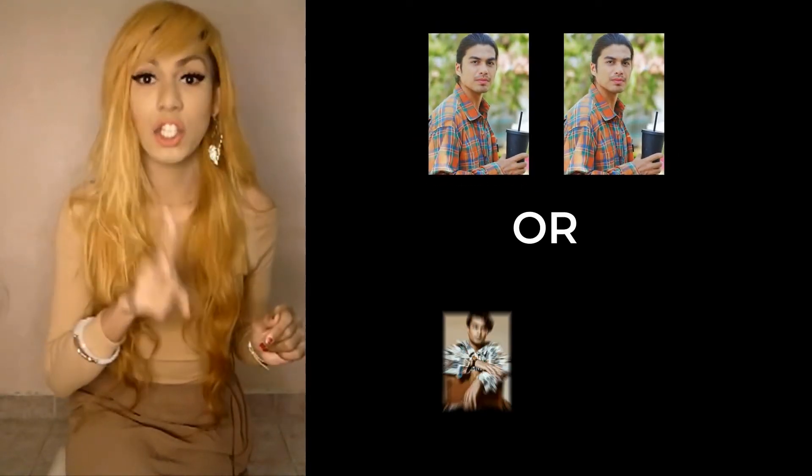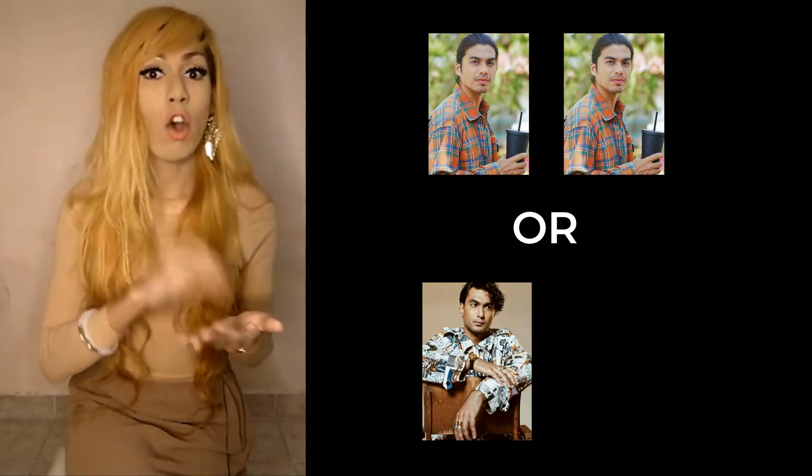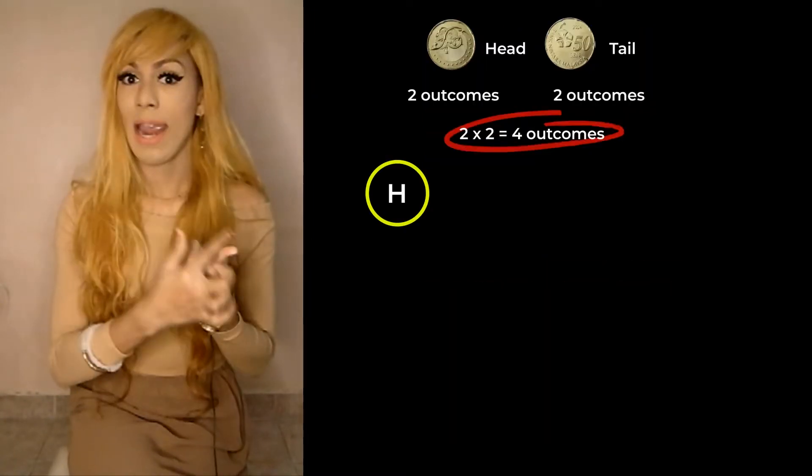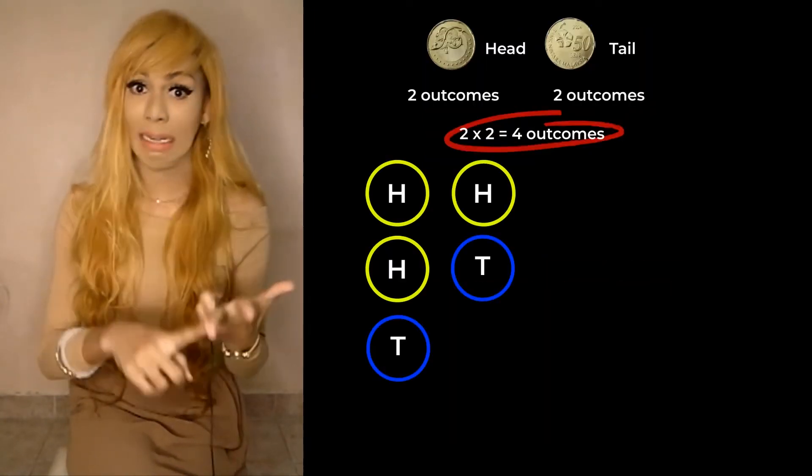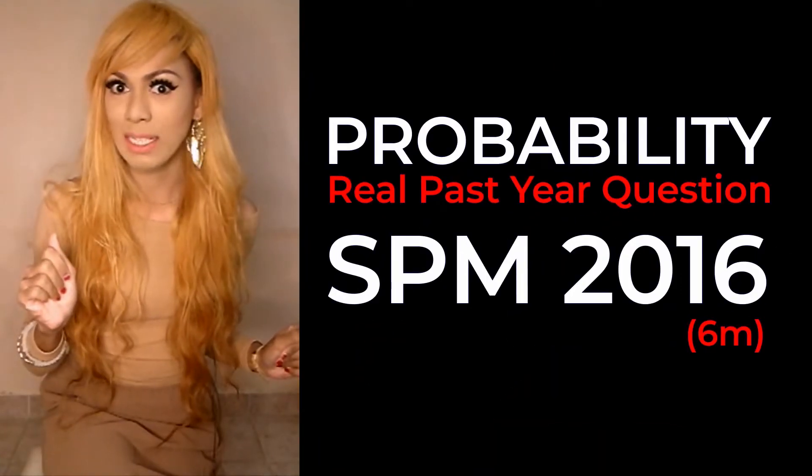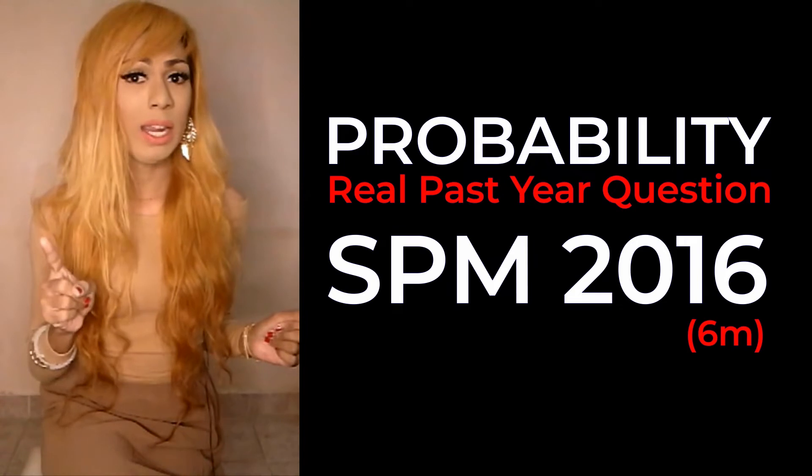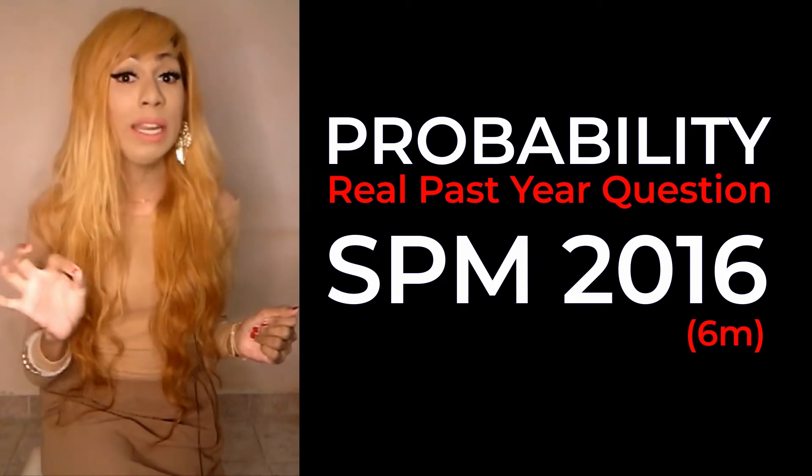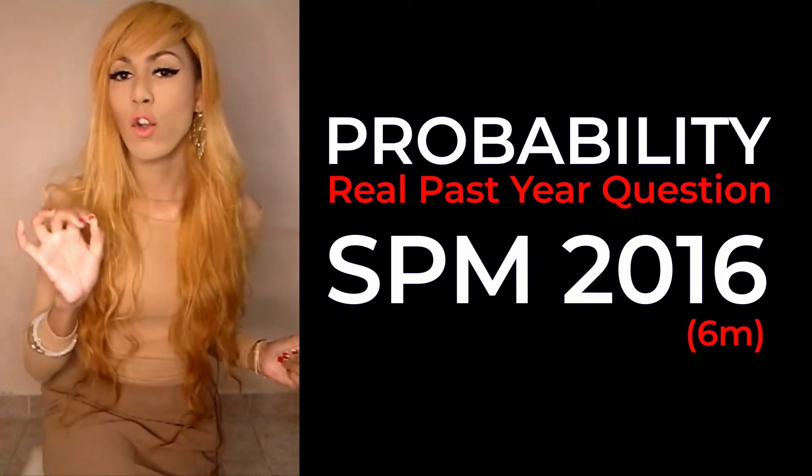Ben have to win consecutively twice or Chandran have to win consecutively twice: head head, tail tail, or tail tail. This video is about probability and we're gonna take a look at the real exam question.